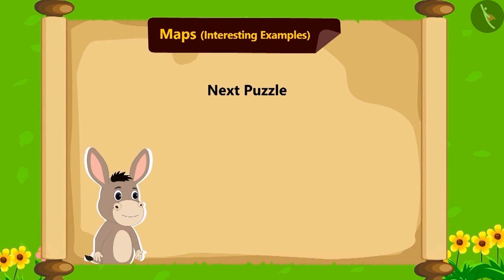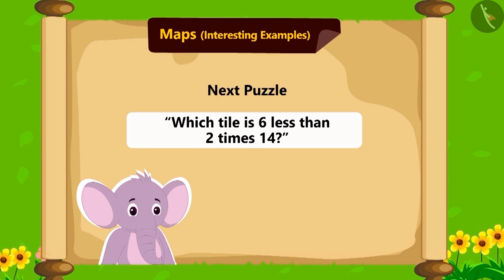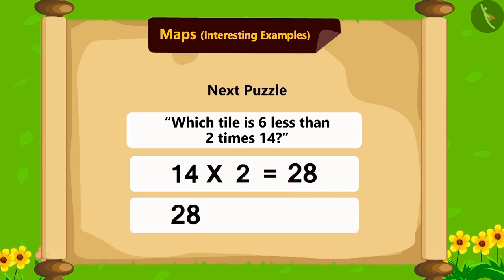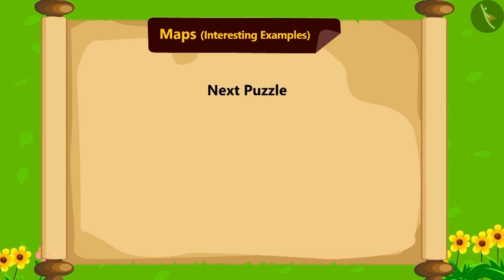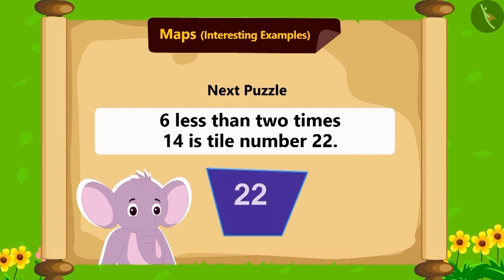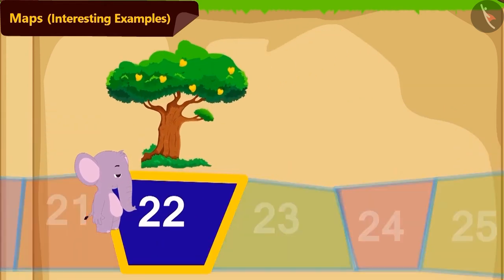Bholla's next puzzle: which tile is 6 less than 2 times 14? Appu became worried after hearing this puzzle. Can you solve it? If we multiply 14 by 2, we get 28. Subtracting 6 from 28 is 22. So 6 less than 2 times 14 is tile number 22. With your help, Appu has quickly moved to tile number 22.